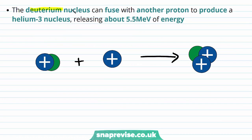This reaction releases about 2.2 mega electron volts of energy. The deuterium nucleus can then fuse with another proton to produce a helium-3 nucleus, releasing about 5.5 mega electron volts of energy.